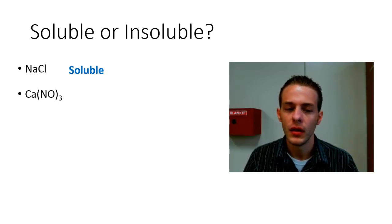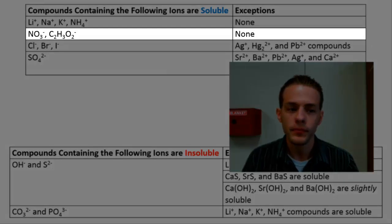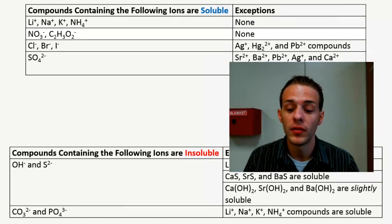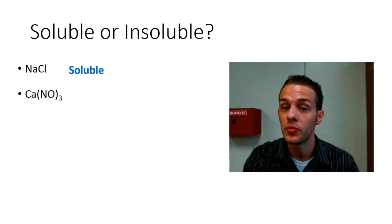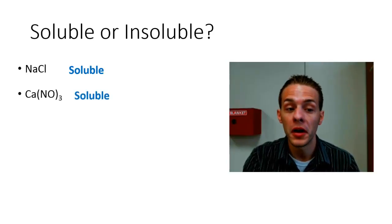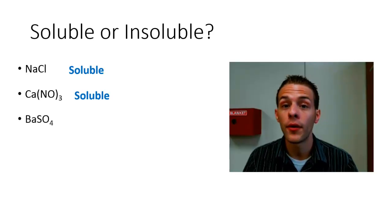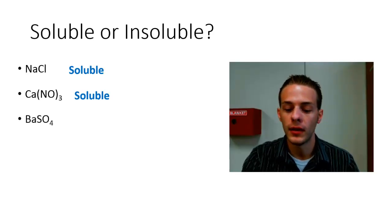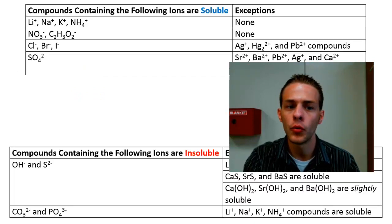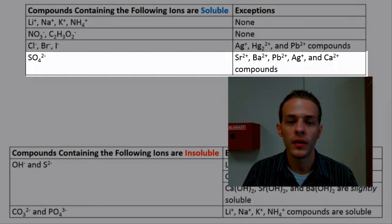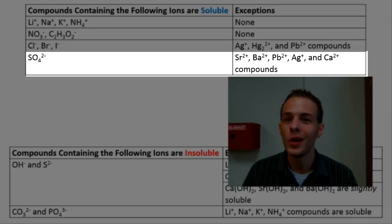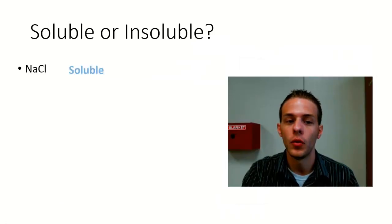Next example: calcium nitrate. The second rule says that when a compound contains nitrate ion, it is soluble with no exceptions. Therefore calcium nitrate is also soluble in water. Next example: barium sulfate. The rule for sulfates says they are generally soluble, but barium sulfate is specifically listed as one of the exceptions.